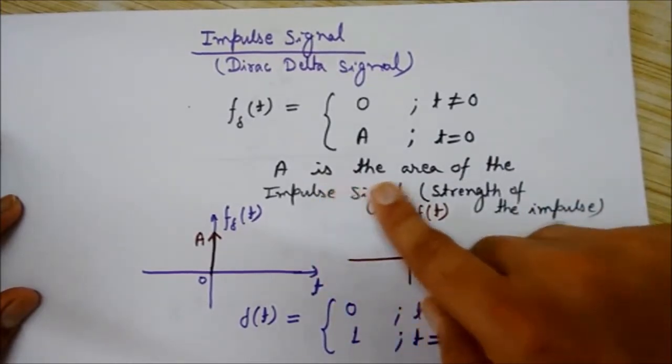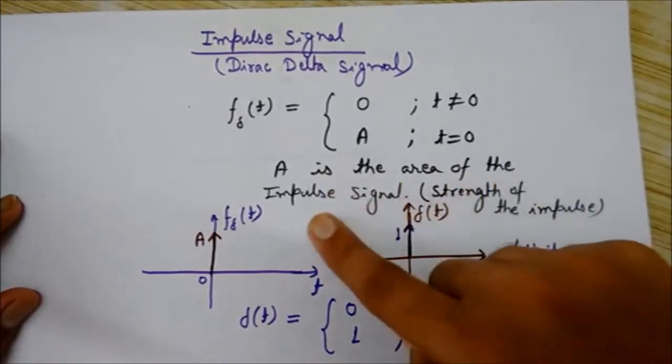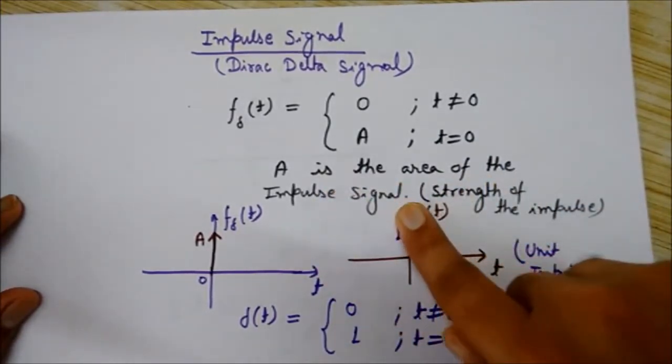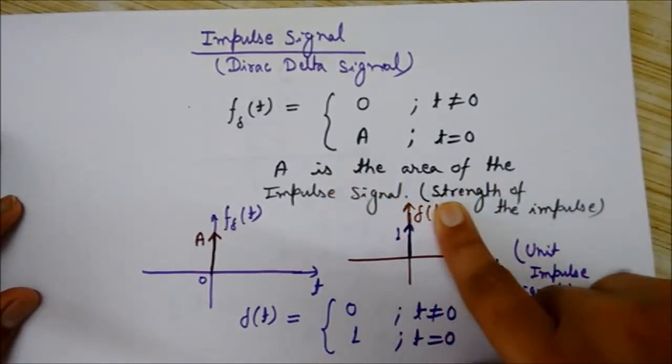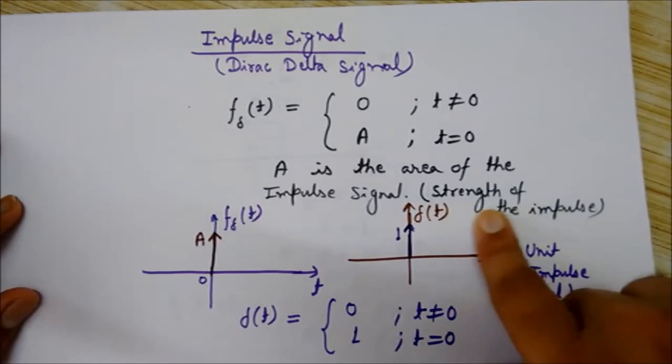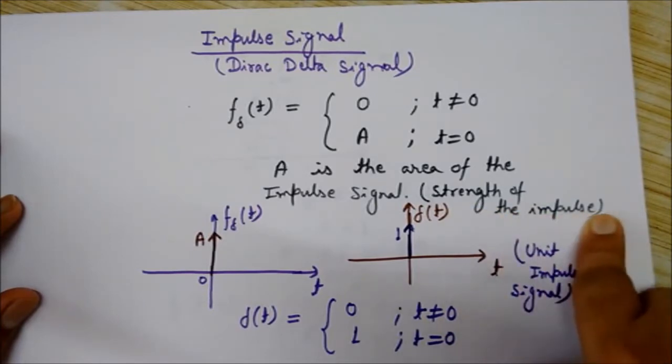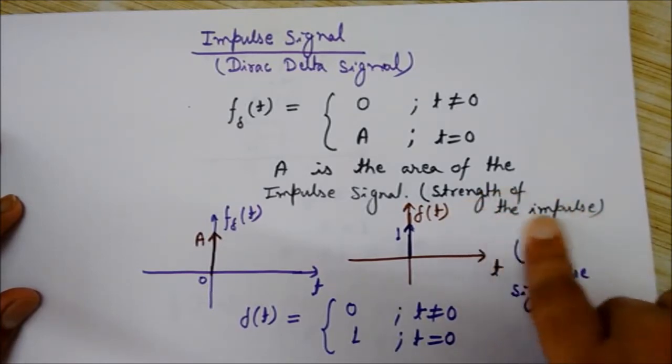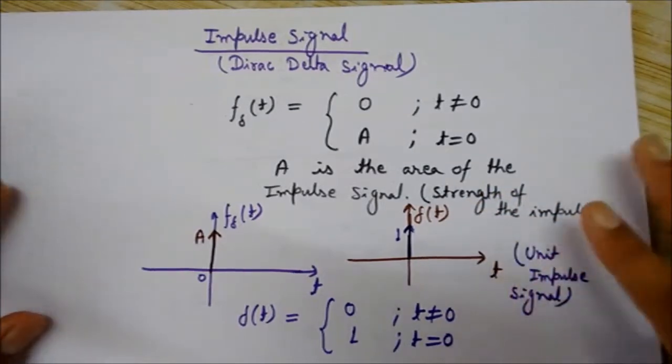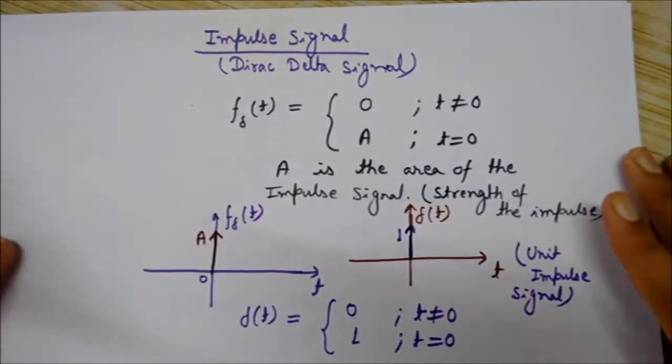Here, what is 'a'? 'a' is the area of the impulse signal. It is also known as the strength of the impulse.